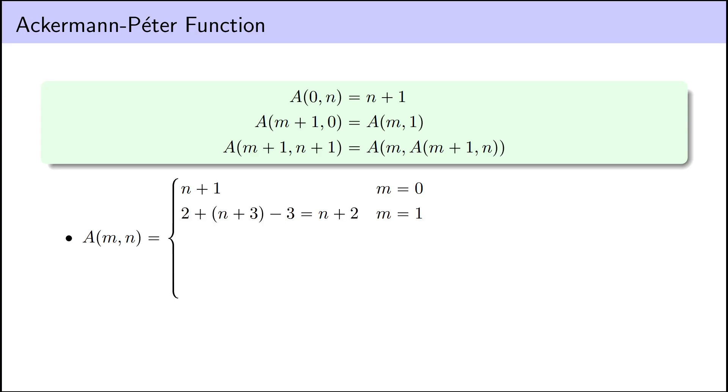When M equals 1, it's 2 plus N plus 3 minus 3. When M equals 2, it's 2 times N plus 3 minus 3. When M equals 3, it's 2 to the power of N plus 3 minus 3. And so on and so forth. In general, it's 2 M minus 2 up arrows N plus 3 minus 3 for arbitrary M.